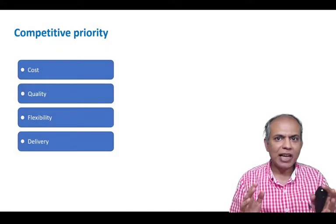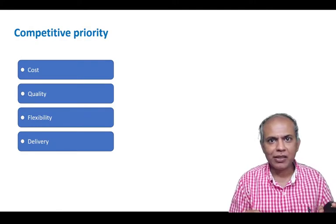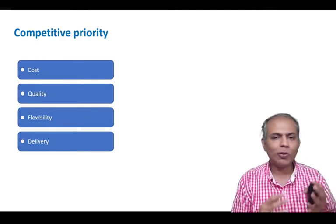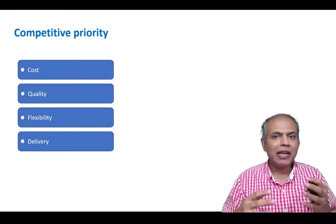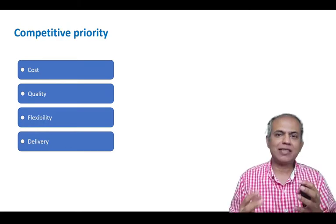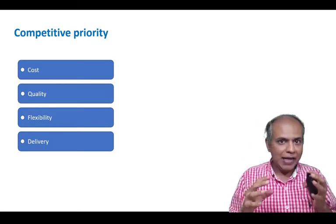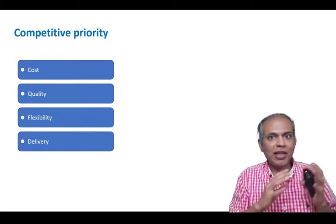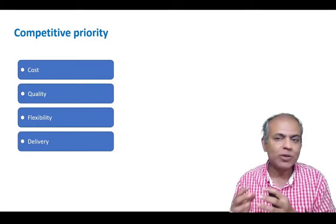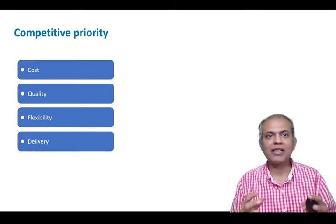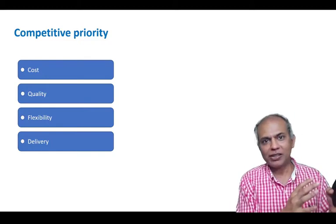The three flows that we talk about in supply chain — the cash flow, material flow, and the information flow — are supposed to help businesses achieve their objectives. In the supply chain world, we define firm objectives or business objectives in terms of competitive priorities.